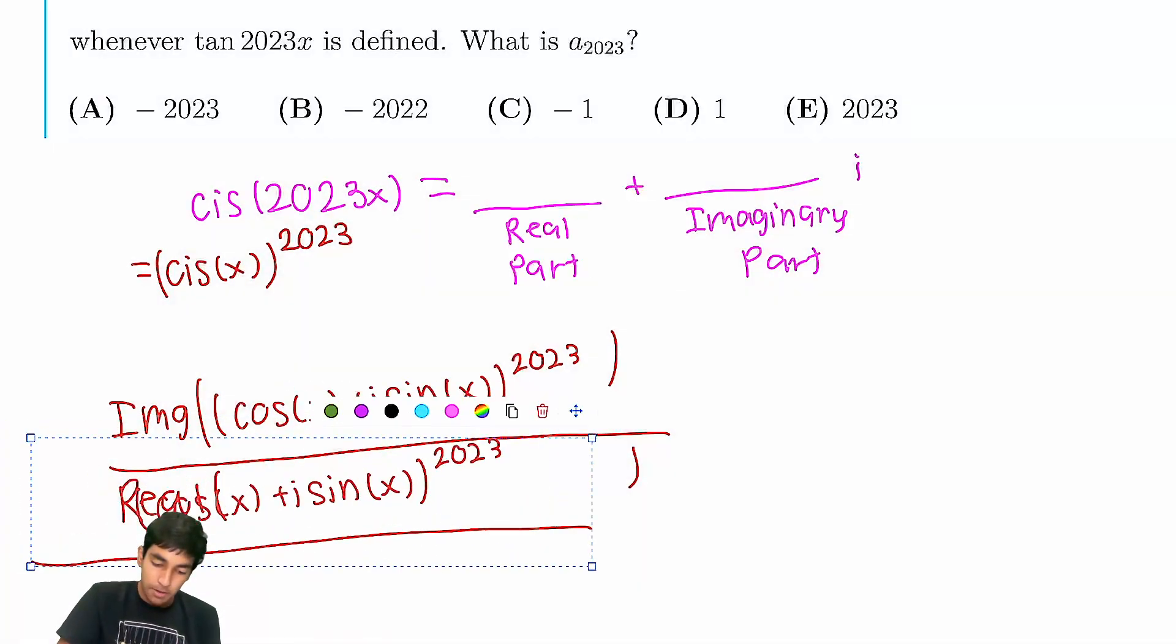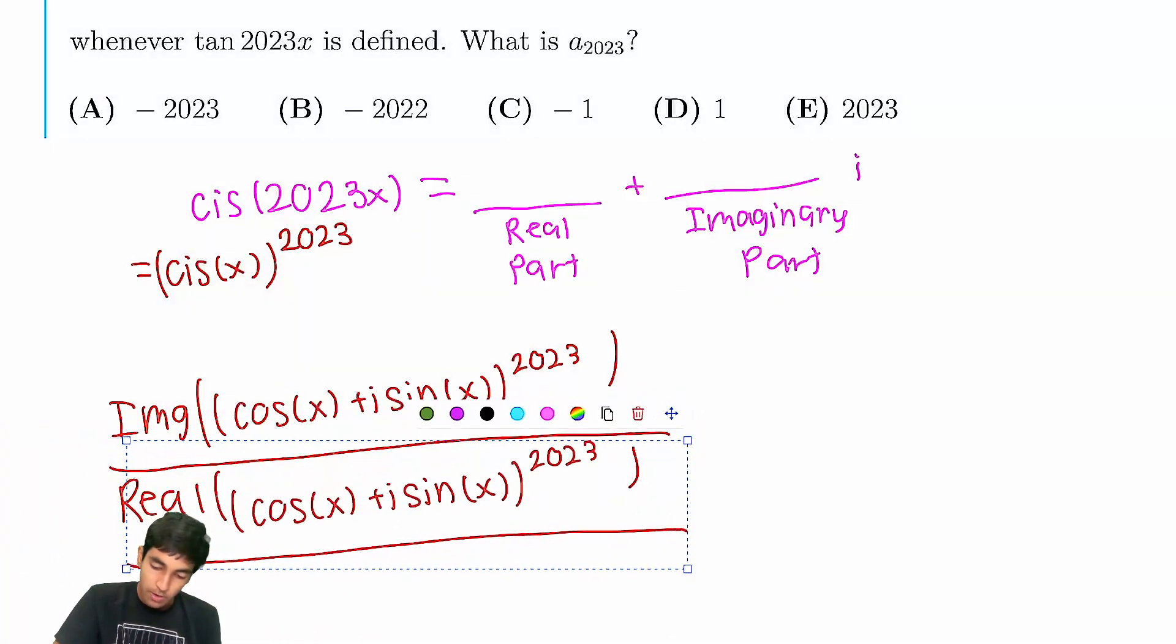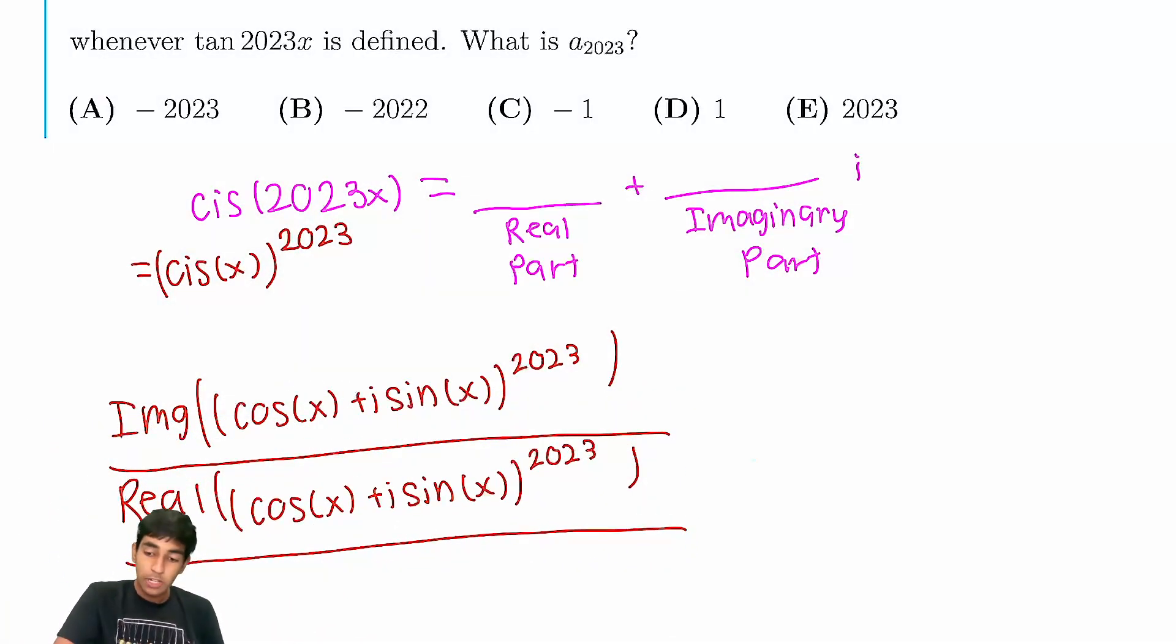So we're looking for this ratio of the imaginary to the real part. Again, the reason we're using complex numbers here, as opposed to just trying to use trig, is because 2023, and you're trying to break it down to smaller values, complex numbers are really useful. Because of De Moivre's theorem, it's really easy to express cis in terms of powers. If it's really easy to express cis in terms of cis of x to the 2023, then we can just look at the real part of that, and the imaginary part of that, and take a look.